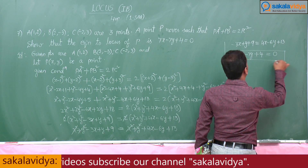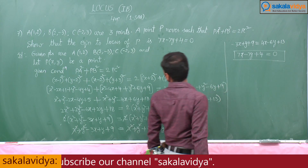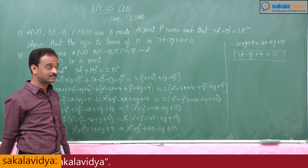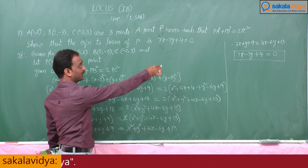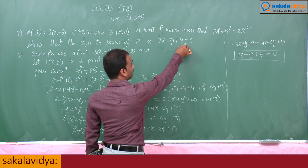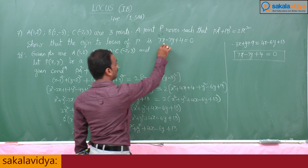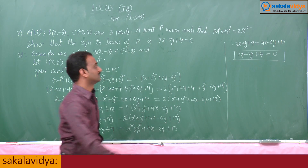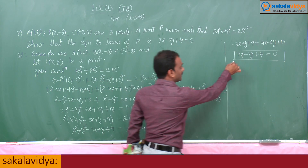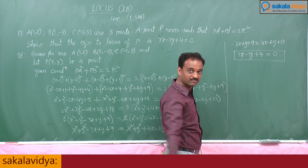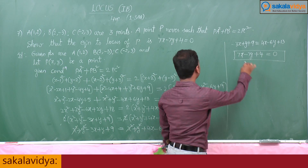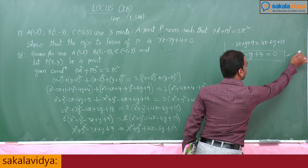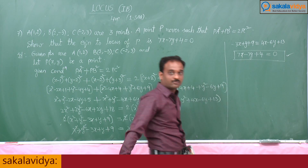Clear! So we have shown that the equation to the locus of P is 7x - 7y + 4 = 0.